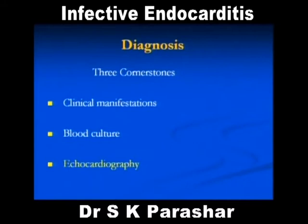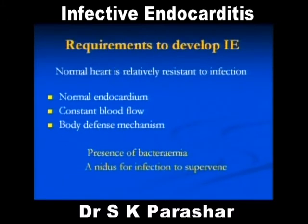There are three things in the diagnosis: clinical manifestations — very important, do not depend only on echo — blood culture, and echocardiography. These are the three main things considered in the diagnosis. A normal heart is relatively resistant; you do not usually get infective endocarditis in a normal heart, unless sometimes there is an overwhelming septicemia.